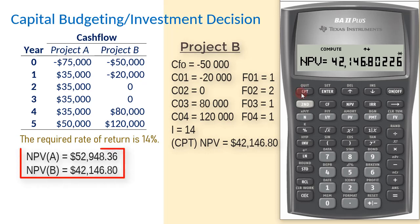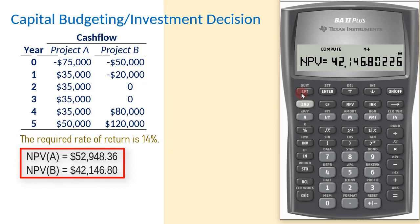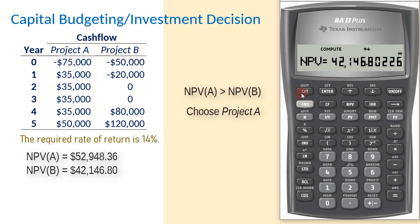Now comparing the two net present values, we see that Project A has a higher NPV. So our decision will be to choose Project A. Thanks for watching.